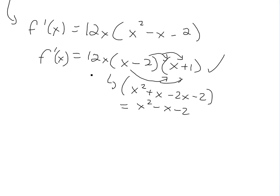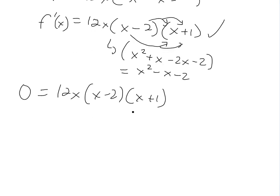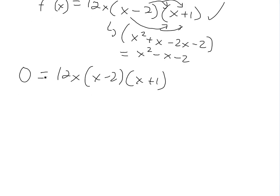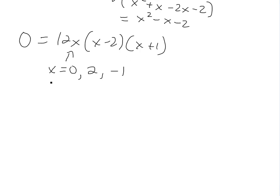So f prime of x equals 12x times (x minus 2) times (x plus 1). Now we set this equal to zero. The derivative is zero in three cases: when x equals 0, when x equals 2 (since 2 minus 2 is 0), and when x equals negative 1 (since negative 1 plus 1 is 0). So these are our three critical numbers: x = 0, x = 2, and x = -1.